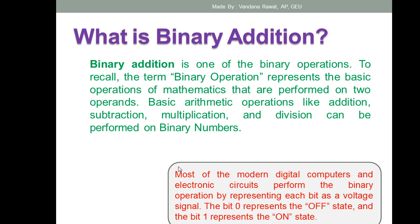Most modern digital computers and electronic circuits perform binary operations by representing each bit as a voltage signal. So zero will represent the off state and the bit one will represent the on state — one is represented with on and zero is represented with off state.